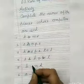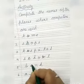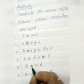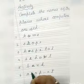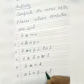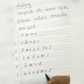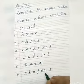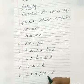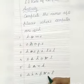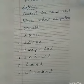The fifth one is B-A-N-K, bank. Computers are also used in the bank. Number 6 is A-I-R-P-O-R-T, airport. Computers are also used in airports where they are used to book tickets and to make the list of passengers.